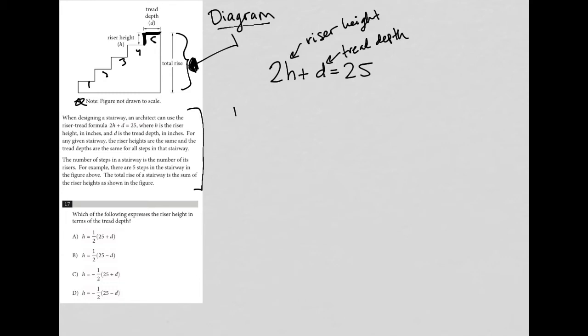So number steps equals number risers, which should make sense. And then, for example, there are five steps in the stairway in the figure above. We'd already counted those out.